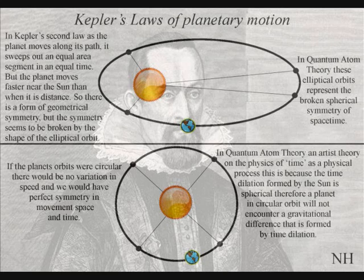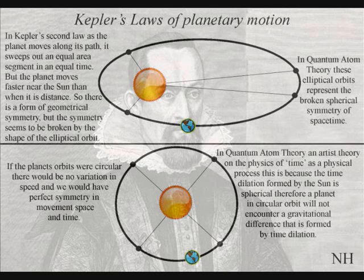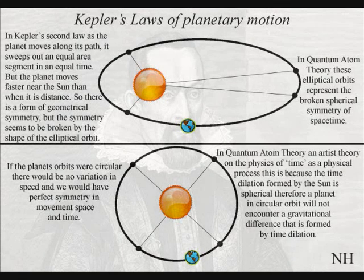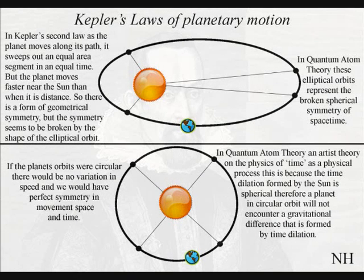In a new theory, this is because of time dilation formed by the sun. If the planets orbits were circular, there would be no variation in speed and we would have perfect symmetry in movement space and time, as can be seen in the lower part of this diagram.